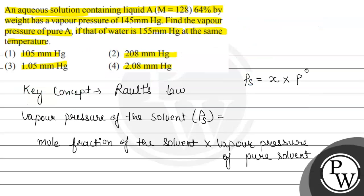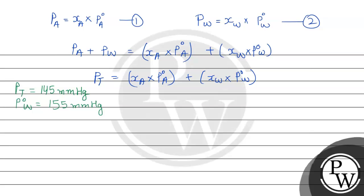According to the given statement, we have 64% by weight, which means 64 grams of liquid A present in 100 grams of solution. So the number of moles of A is 64 divided by 128. The remaining mass is water: 100 minus 64 equals 36 grams, so the moles of water are 36 divided by 18, which equals 2.